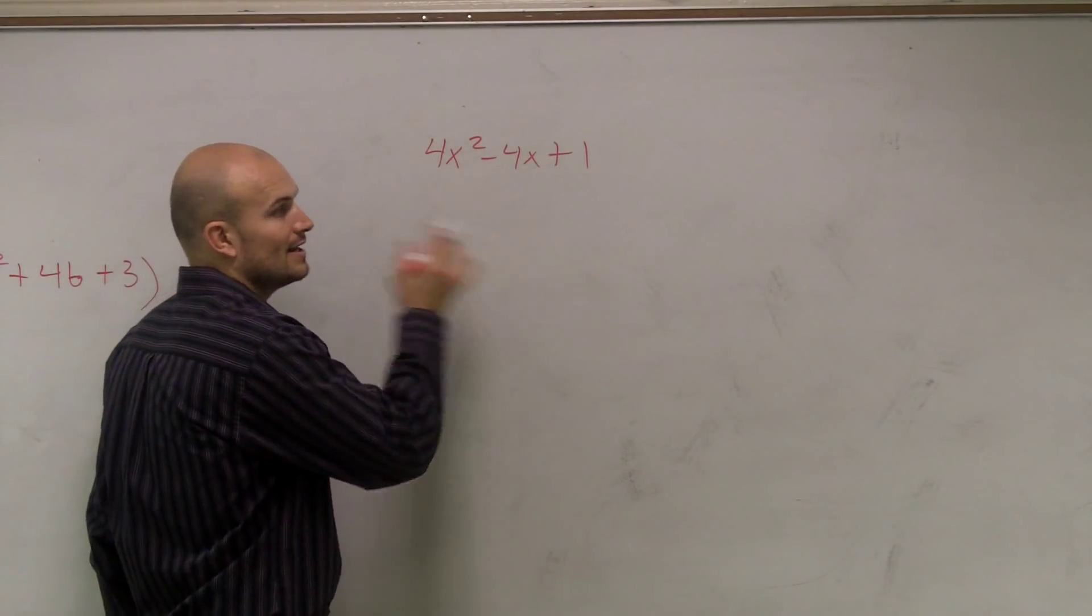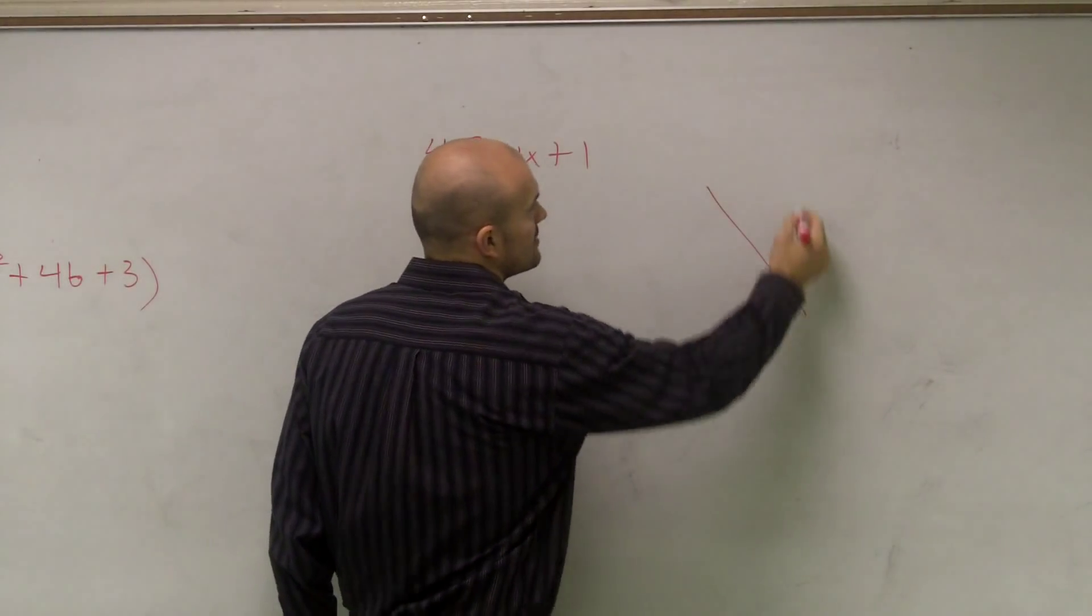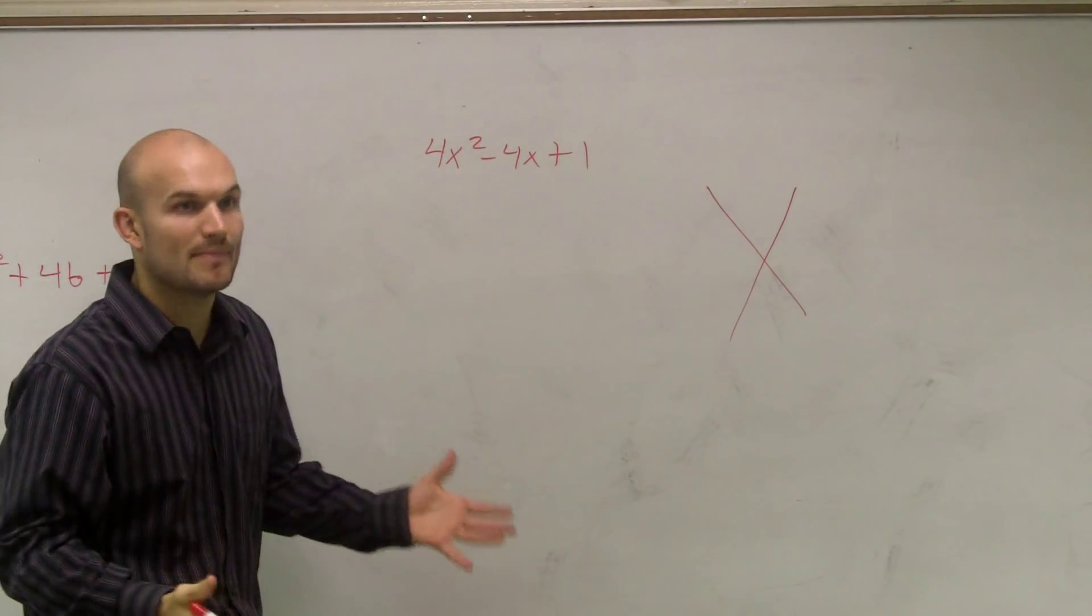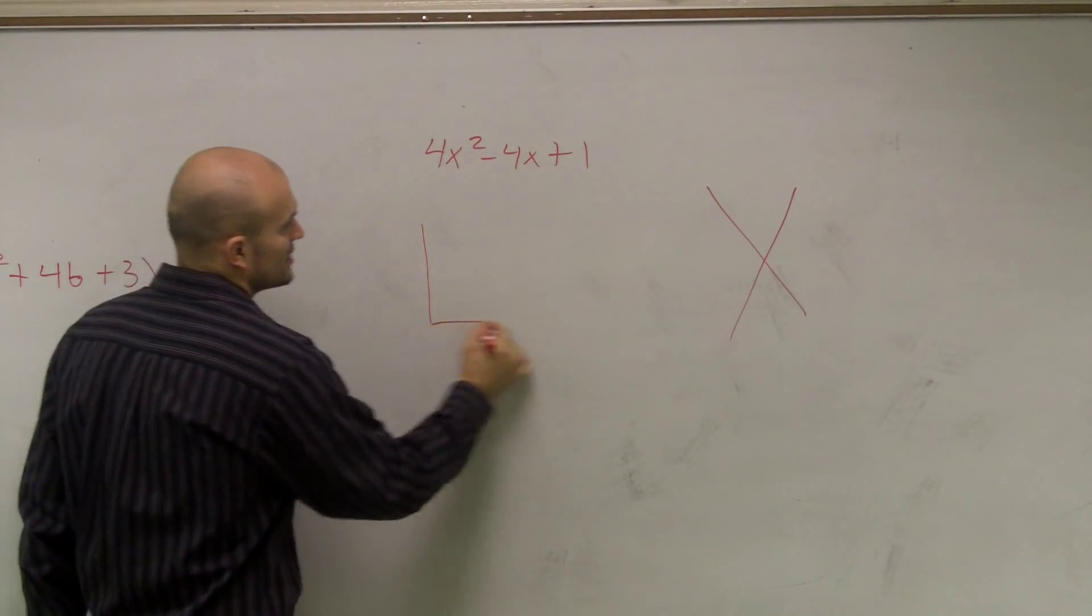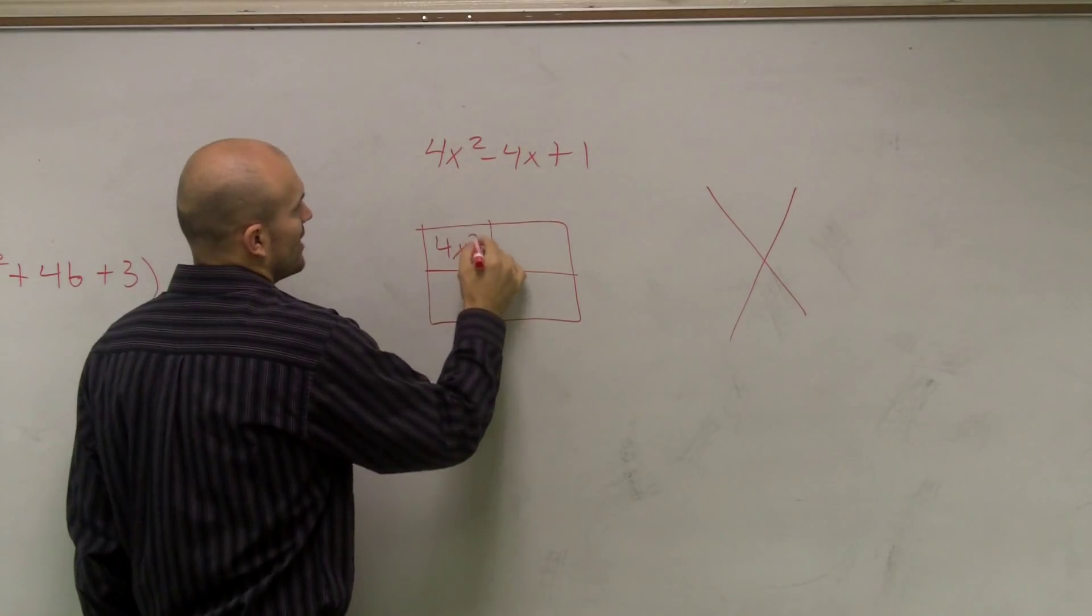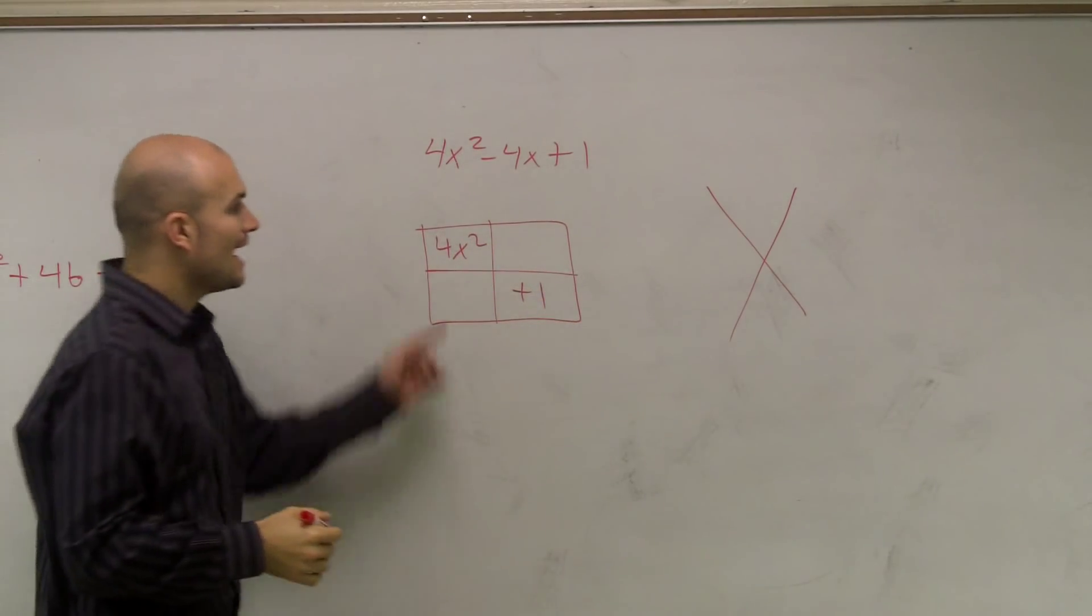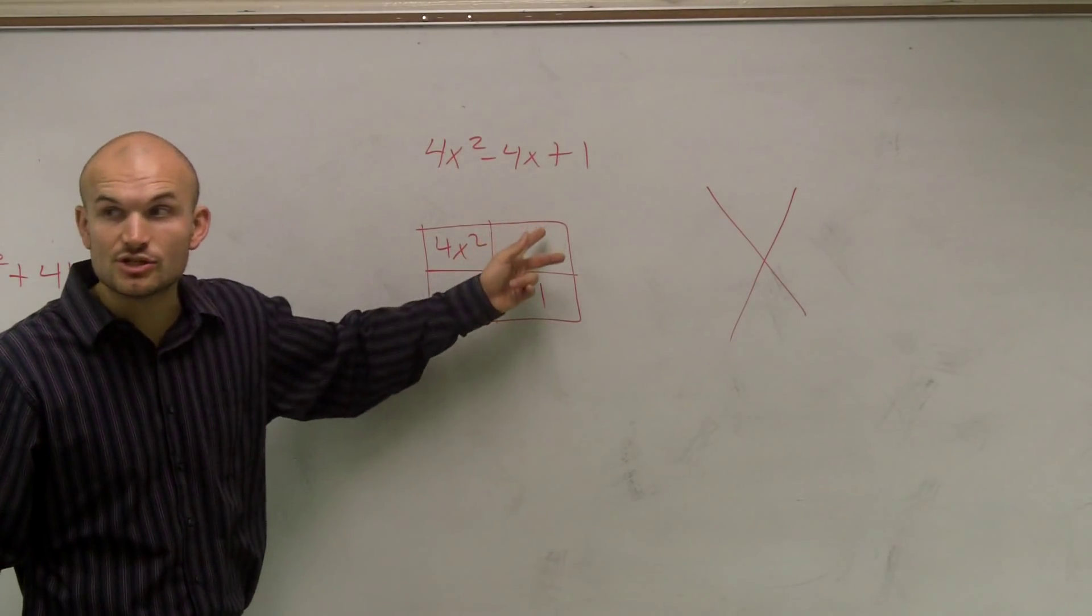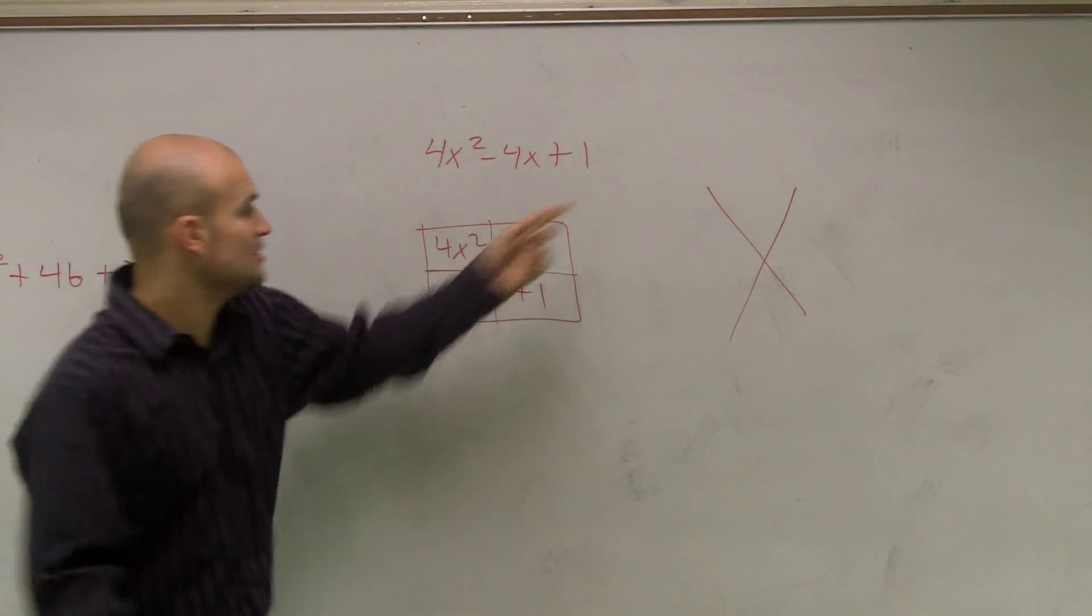So now I have to use my diamond, my x, to help me determine what my factors could be. One way I can do this is my box. In the box, we have 4x² plus 1. I don't know what's going in these two boxes though, so I need to use my diamond.